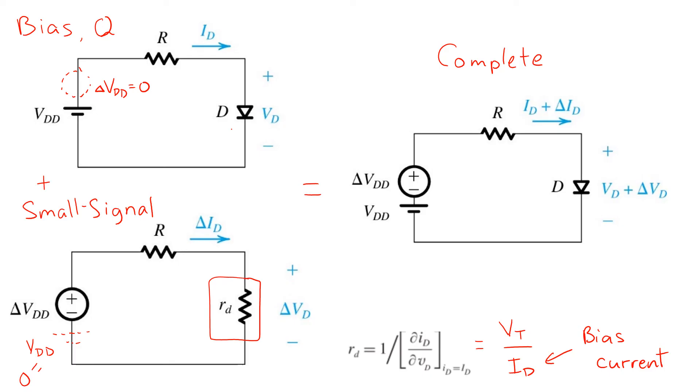So again, this small signal schematic is somewhat of a fiction. It's just a picture that's used to represent all the small signal quantities. We've called them delta ID, but we can also use the lowercase notation to remind us that these are small signal quantities. And the schematic just represents the sort of linear relationship between all these quantities in schematic form.